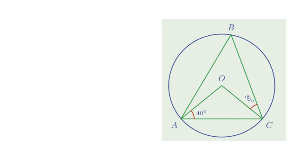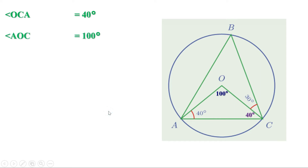Now the second figure. We again find angles of triangle OBC and triangle ABC. Triangle AOC is isosceles; since one base angle is 40 degrees, the other is also 40 degrees. Therefore angle AOC equals 180 minus 80, which is 100 degrees. Then angle ABC equals half of 100, which is 50 degrees.